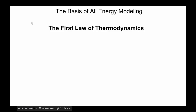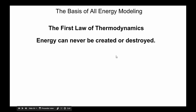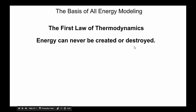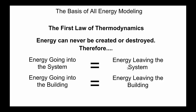The basis of all energy modeling — the key thing we're going to be simulating today — is the first law of thermodynamics. Energy can never be created or destroyed, therefore the energy that goes into any system over time has to equal the energy that leaves that system. The types of energies that go into buildings include: human beings (each producing roughly 100 watts of heat), computers and appliances, light bulbs, and especially solar radiation — solar heat coming through the windows.